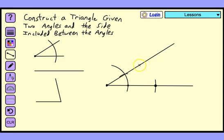The third vertex of the triangle will be somewhere along this line segment. To find the location of the third vertex, we need to make a copy of the second angle.